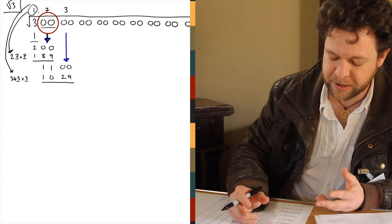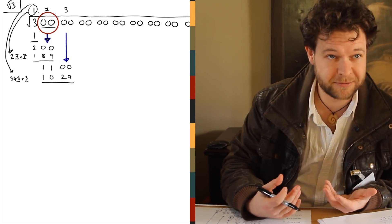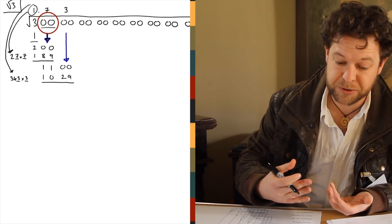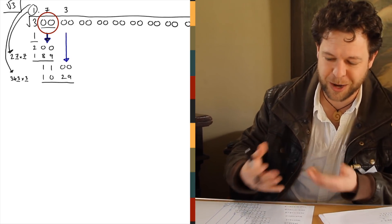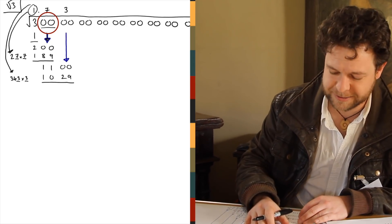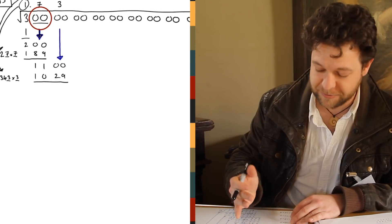And that feels really mysterious until you realize that when you square single digits—this is all about squaring and square rooting—you get at most a two-digit number. So the process of squaring and square rooting changes between one digit and two digits, and that's why these things go in pairs.